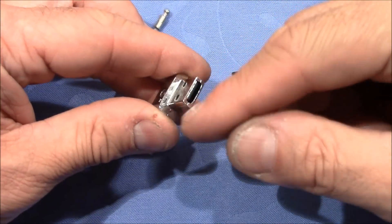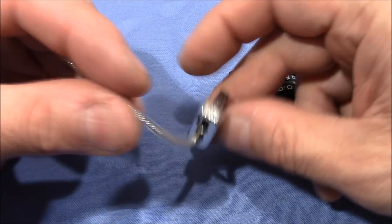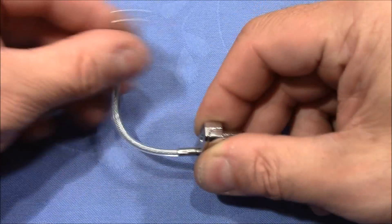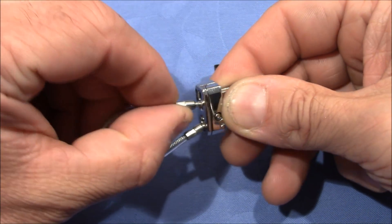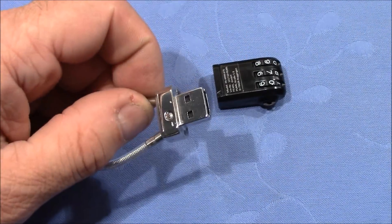It has the shape of a USB stick and it works in the following way: you secure whatever you want to lock up with this wire, and then it goes in this little hole here.